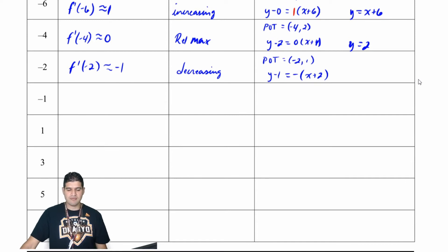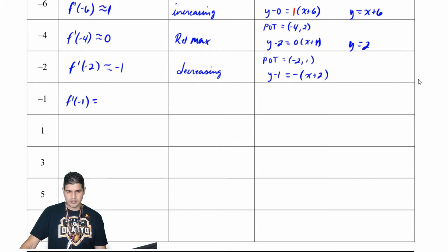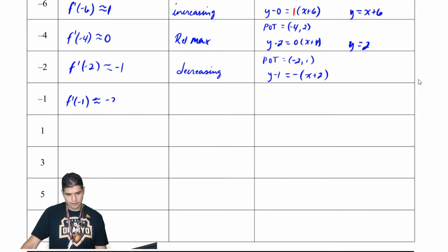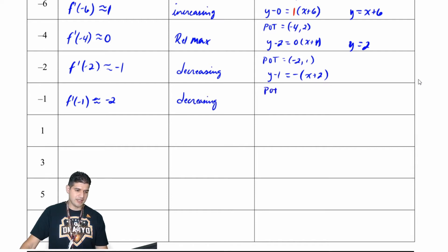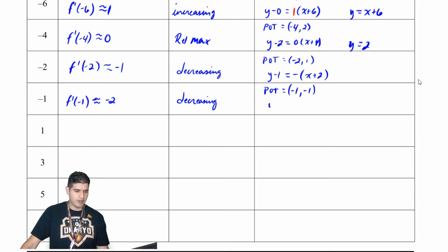For f prime of negative 1, that's approximately negative 2. The function is decreasing here, my point of tangency is negative 1 comma negative 1, and my equation is y plus 1 equals negative 2 times x plus 1.